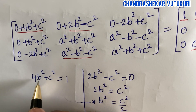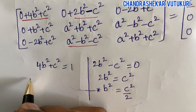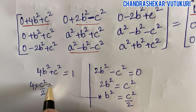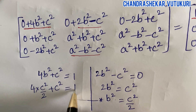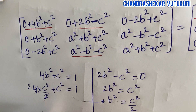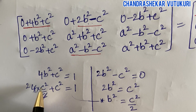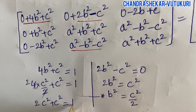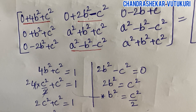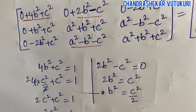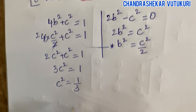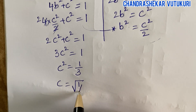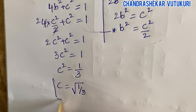Substituting b² = c²/2 into 4b² + c² = 1: 4 times c²/2 plus c² equals 1, which gives 2c² + c² = 1, so 3c² = 1. Therefore c² = 1/3, and c = 1/√3.